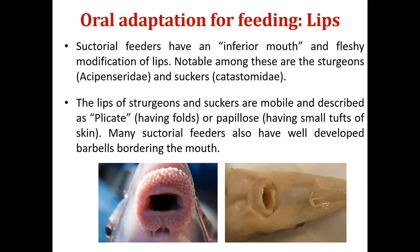Sucker-type fishes have an inferior type of mouth — the mouth position is on the lower ventral side of the body — and they have very thick and fleshy movable lips. Because of these thick fleshy lips, it provides a cushion-type structure that helps in sucking food from the bottom. This is also seen in modified lips in sturgeons. So fishes with sucker feeding habits have modified lips to support that feeding.